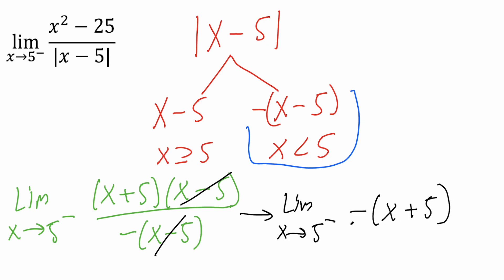And lastly now we have to swap. So we're going to change x to 5. So we have negative parentheses 5 plus 5. And 5 plus 5 is 10. So we have negative 10. And that's our final answer. And that's all we need to do for this problem.